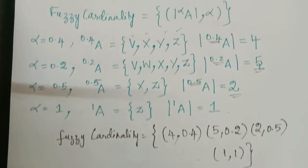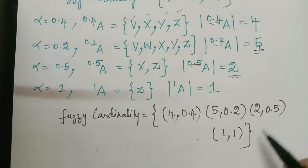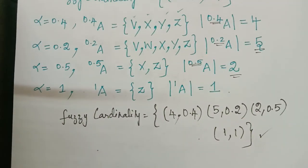So therefore this is how we have to find the scalar cardinality and the fuzzy cardinality. Hope you have understood this problem. Thank you.